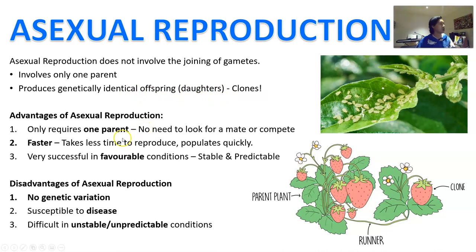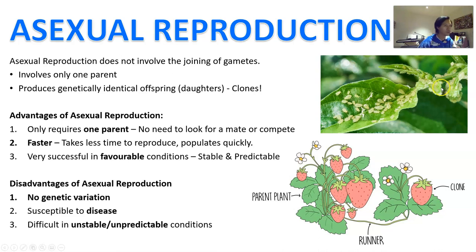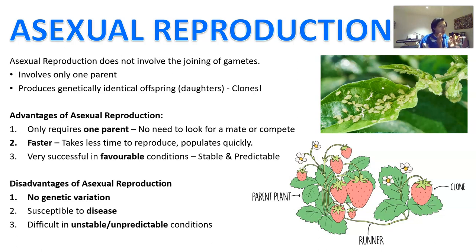The advantage of asexual reproduction is that you only need one parent — you don't need to look for a mate and you don't have to compete for a mate, and you can just produce babies whenever you want. This makes it faster and takes less time to reproduce, and you can populate a particular environment quite rapidly. If you ever grow plants, you'll see this with aphids — the moment a plant gets one aphid, if you leave it alone, one becomes two, two becomes four, and next thing you know the whole plant's full of aphids. In stable and predictable conditions, the population just explodes — one bacteria can quickly become 11,000 bacteria within one day, which isn't a lot of fun if that bacteria is a pathogen.